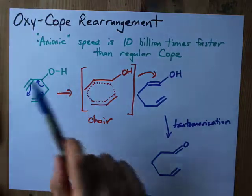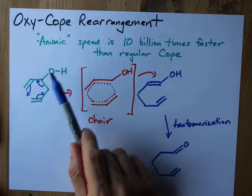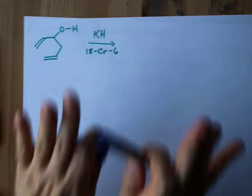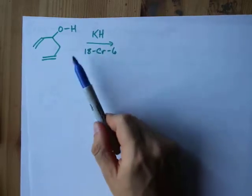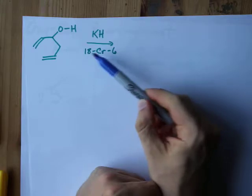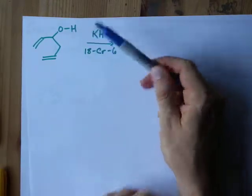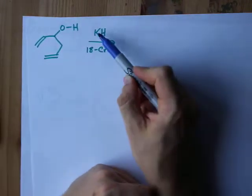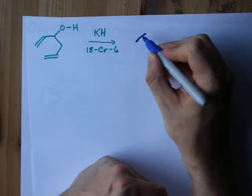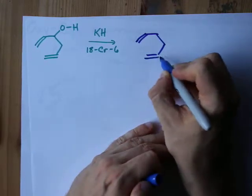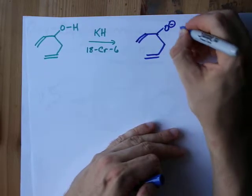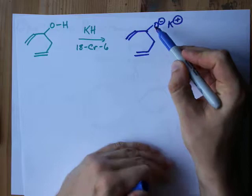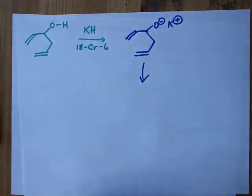You can make this thing go even faster — 10 billion times faster — if this was just O- as opposed to OH. How would you do that? Here's the same reactant and I'm going to add potassium hydride and 18-crown-6 ether. 18-crown-6 ether has a propensity to attach to K+ ions as a ligand. The reaction of KH with this alcohol gives us the exact same carbon structure, but it gives us O- with K+ as the counter ion. The fact that this is now an O- makes the whole oxy-COPE rearrangement go way faster.